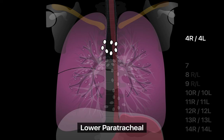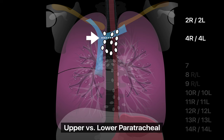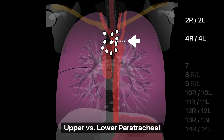Lower paratracheal lymph nodes are next to the lower trachea, station 4R on the right and 4L on the left. Upper paratracheal lymph nodes are next to the upper trachea, station 2R on the right and 2L on the left. The inferior margin of the left brachiocephalic vein at the trachea is the boundary between upper and lower paratracheal lymph nodes on the right, while the upper margin of the aortic arch serves as the boundary on the left.